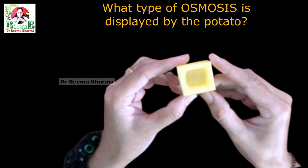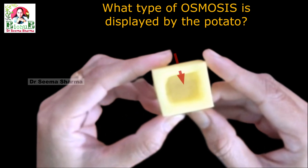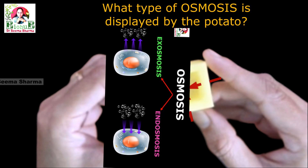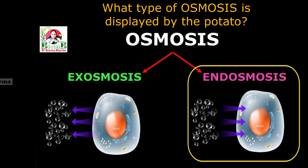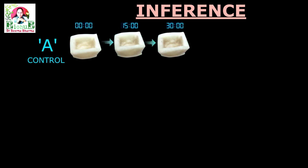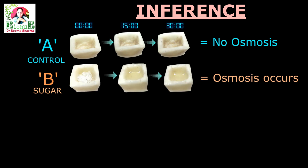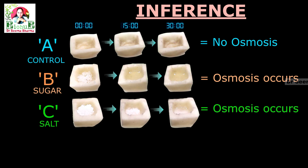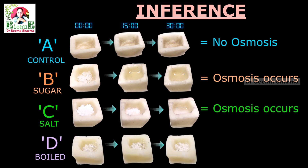In this experiment you have noticed the inward movement of water. This type of movement of water across the semi-permeable membrane is called endosmosis. The comparative analysis reveals: cup A, which was the control, showed no accumulation of liquid in the potato cavity — meaning no osmosis. Cup B showed gradual inward movement of water from outside into the cup due to difference in solute concentration. Cup C also showed similar inward movement of water clearly visible. Cup D showed no such accumulation of liquid.